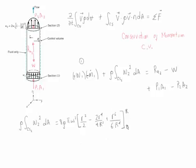If we substitute the limits of integration into this equation we find that this is going to be equal to 8 rho pi W1 squared R to the 4th.